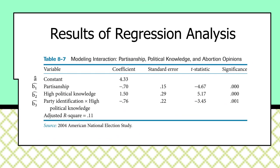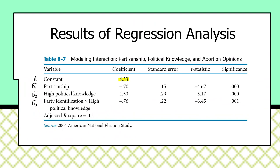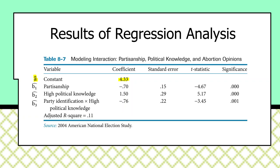Here are the estimates, presented in the format you'd see in computer output. The constant is 4.33 — the scale score for low-information Democrats, since partisanship drops out, high knowledge is 0, and the interaction term is also 0. Using the constant A-hat and partisanship coefficient B1-hat, we find the effect of partisanship for low-information respondents: starting at 4.3, reducing by 0.7 to low-information independents, and another 0.7 to Republicans — dropping about 1.4 points across values of partisanship for low-information individuals.